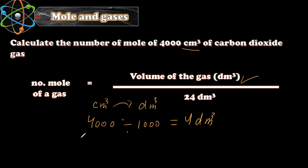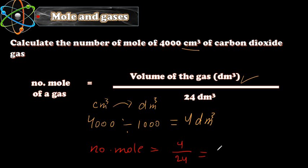Now we calculate the number of moles. Number of moles equals volume of the gas in dm³, which is now 4, over 24 dm³. This gives us approximately 0.167 moles, because the unit we are looking for is moles.